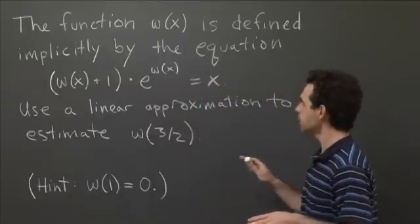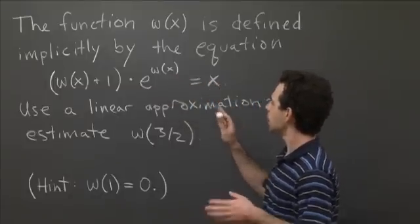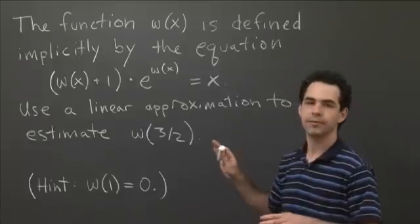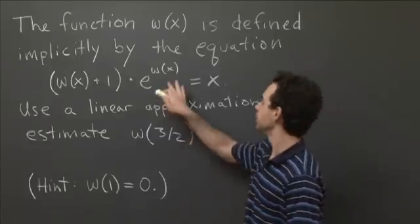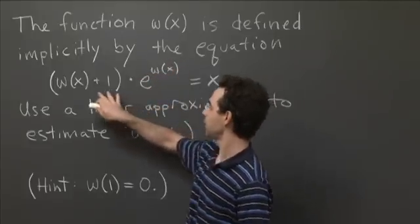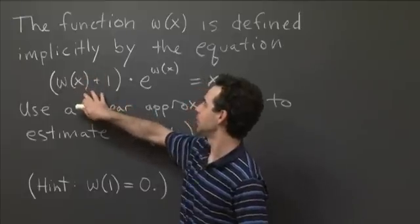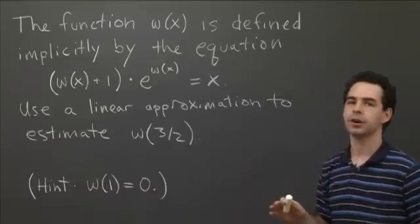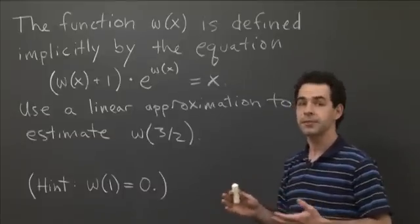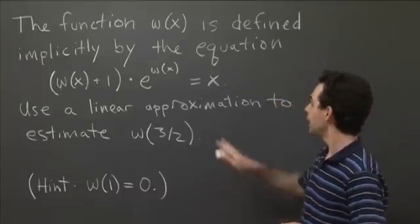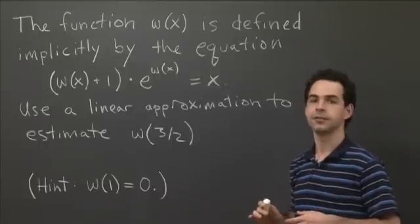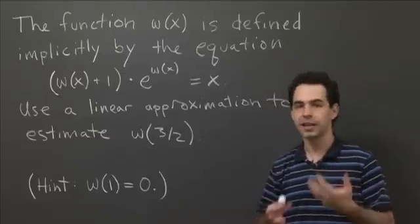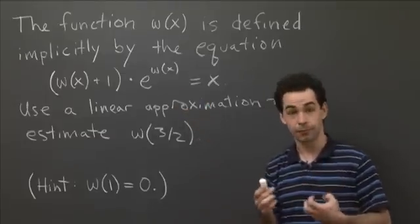Some values of this function you can guess. At x = 0, the function value is going to be negative 1, because the only way to get the right-hand side to be 0 is if w = -1, making that term 0. But some values aren't easy — for example, w(3/2) is very hard; there's no algebraic way to figure that out.